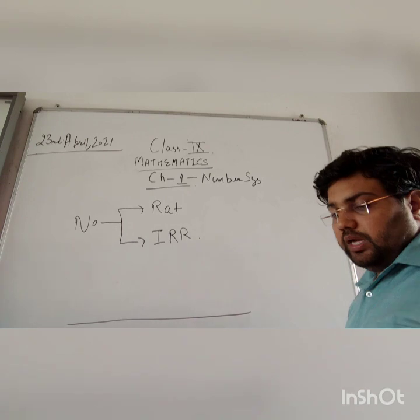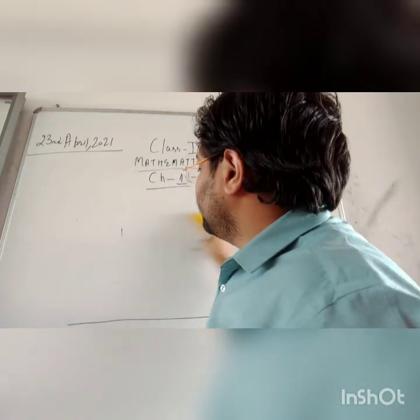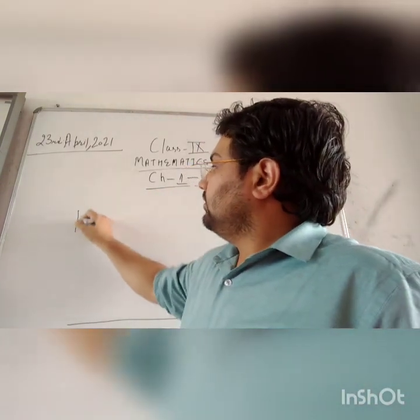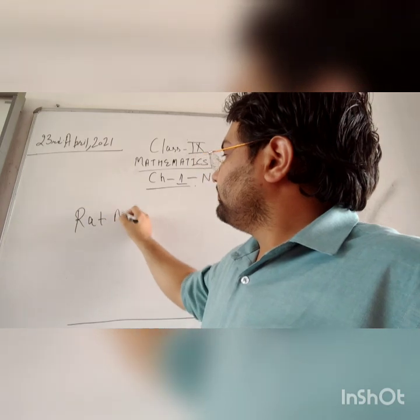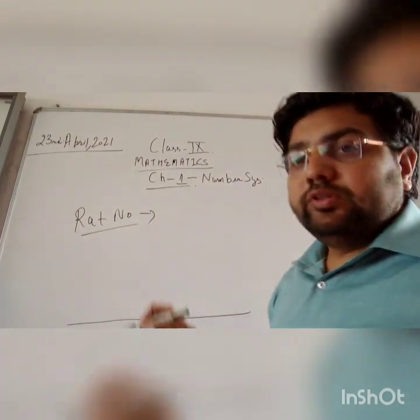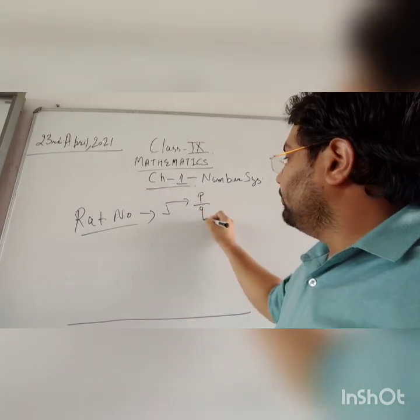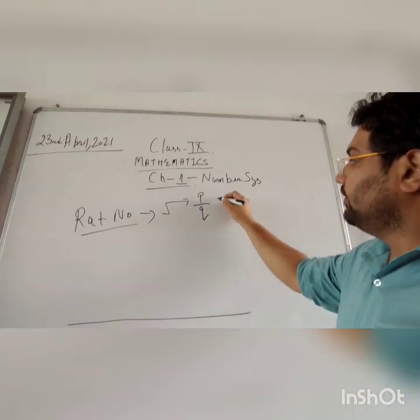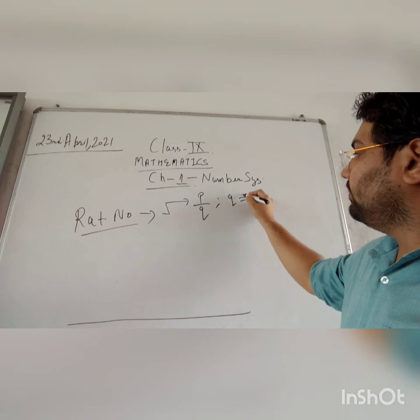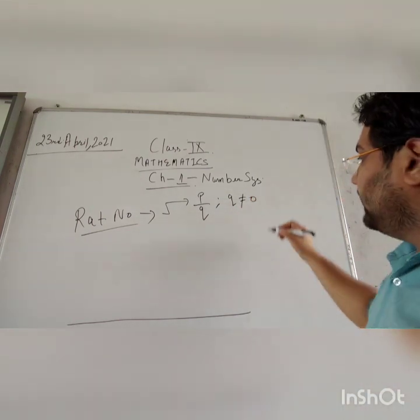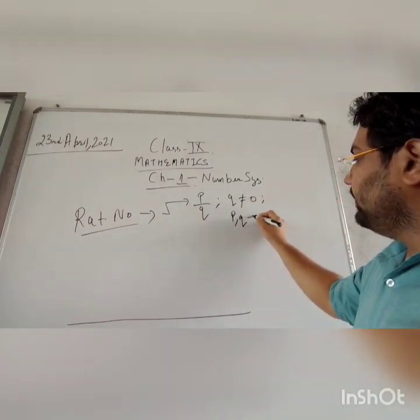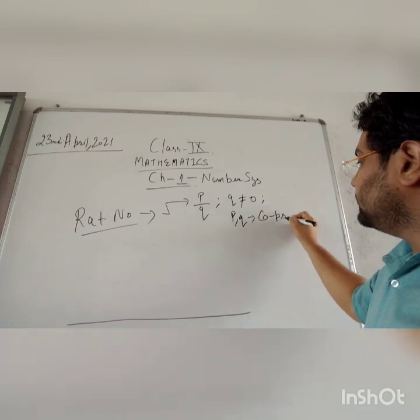So one is rational numbers. First we will look at rational numbers. So what are rational numbers? Those numbers which can be written in the form of P by Q, P by Q where Q should not be equal to 0, and P and Q are co-prime to each other.